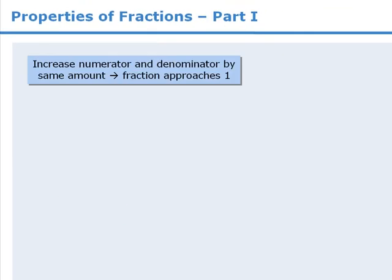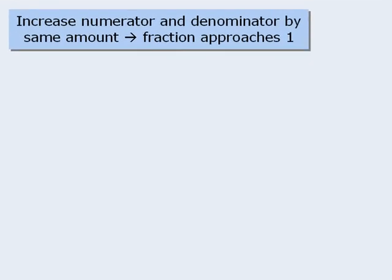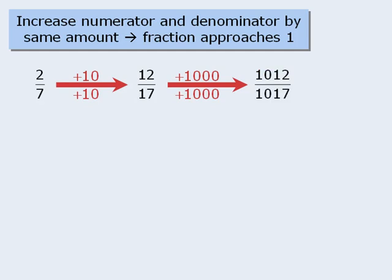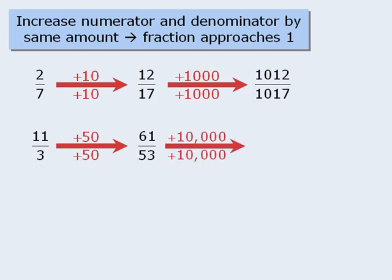One last property: if we take a fraction and increase the numerator and denominator by the same amount, the value of the resulting fraction will be closer to 1. For example, if we take 2 over 7 and add 10 to the top and bottom, the resulting fraction, 12 over 17, is closer to 1 than 2 sevenths is. Furthermore, if we take 12 over 17 and add 1000 to its numerator and denominator, the resulting fraction is closer to 1 than 12 over 17 is. Similarly, if we take the fraction 11 over 3 and add 50 to the top and bottom, the resulting fraction, 61 over 53, is closer to 1 than 11 over 3 is. And if we add 10,000 to the top and bottom of this fraction, the resulting fraction is even closer to 1.